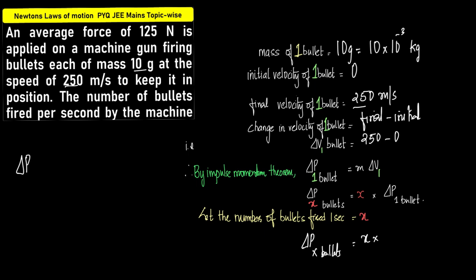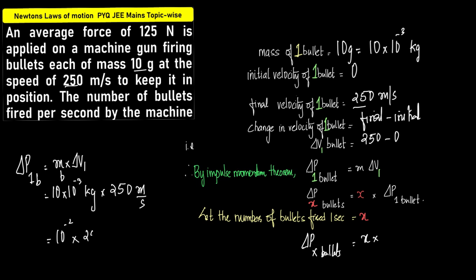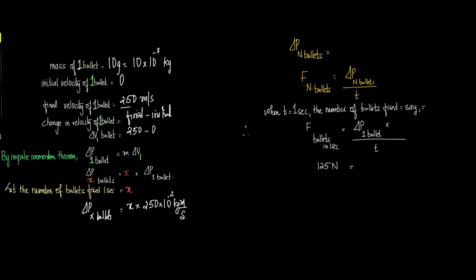Delta P of one bullet is equal to mass into delta V of one bullet, which is 10 into 10 to the power minus 3 kilogram into 250 meter per second, which is equal to 250 into 10 to the power minus 2 kilogram meter per second. Now, let us not use N here because you may get confused with Newton.